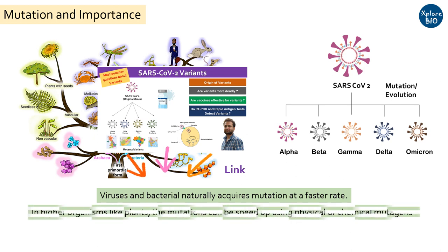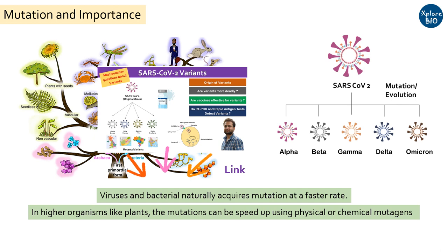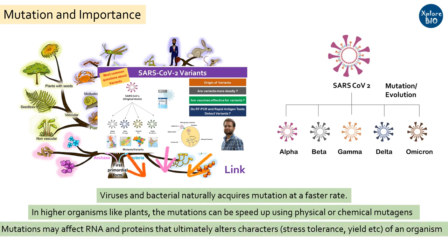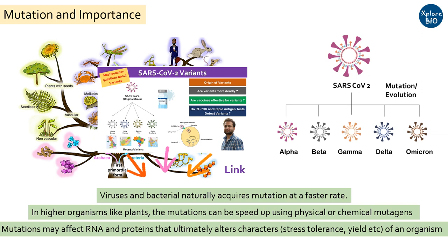Mutation can be sped up in higher life forms like plants by utilizing physical or chemical mutagens, such as radiations and DNA alkylating agents. Such mutations alter the genetic composition or the DNA, and hence the proteins and RNA they code for. Ultimately, this affects the characteristics and traits of plants such as tolerance to disease, drought, yield potential, height, color, and others.